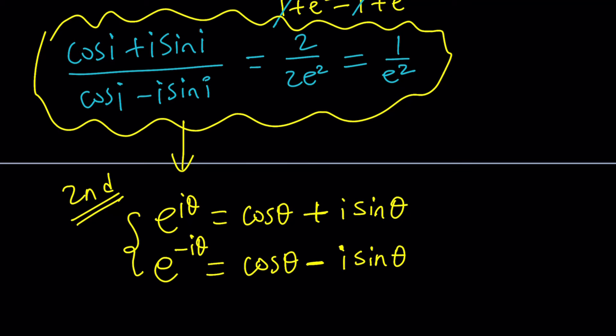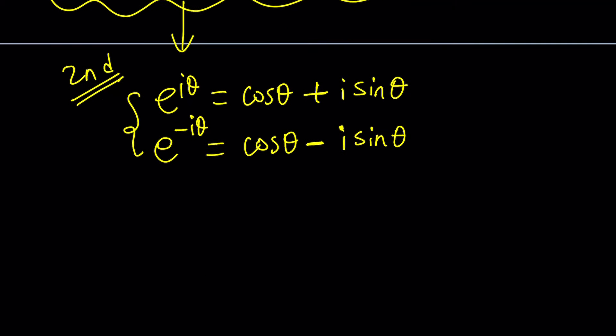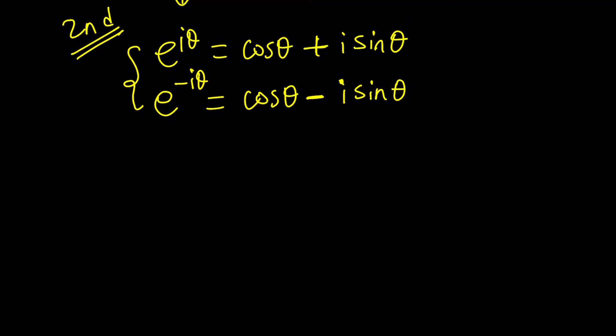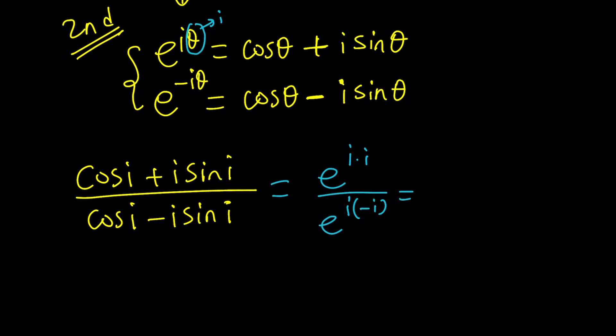So that's what we get from here. And by adding these and subtracting these, you get the cosine and sine. But that's not the point. We're supposed to evaluate it directly because this is the second method. It's supposed to be better. So we are trying to simplify cosine i plus i sine i divided by cosine i minus i sine i. All you have to do is change the theta to i in both of these equations. And you're going to get it. In other words, this is going to be e to the i times i, and it's going to be e to the negative i times i.